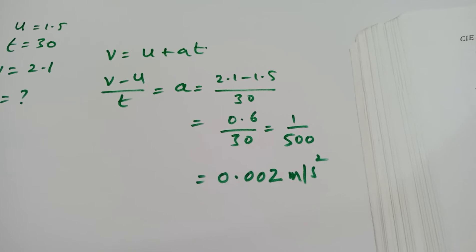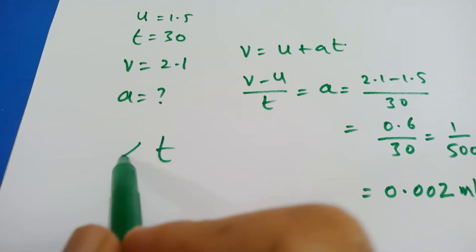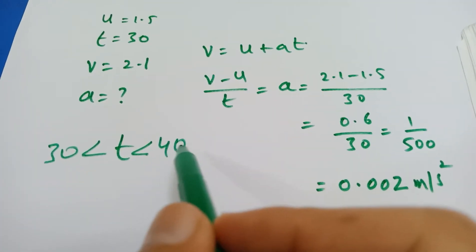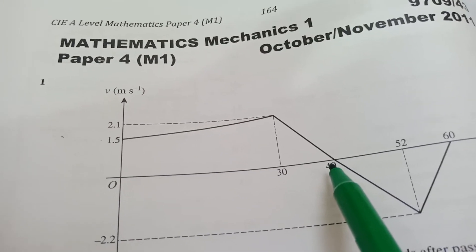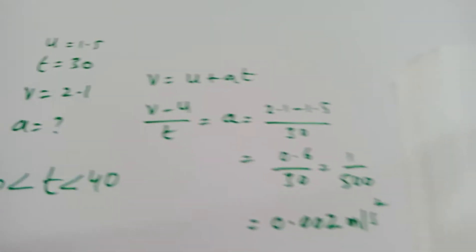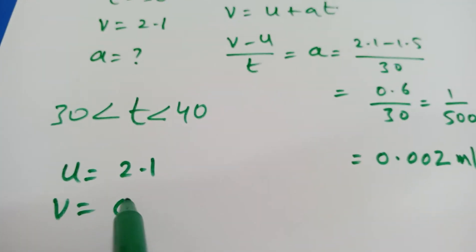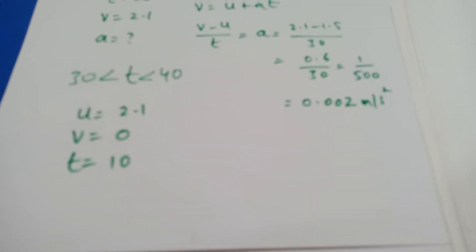For the interval from 30 to 40 seconds, you can see this is the segment from t = 30 to t = 40. The initial speed is 2.1 and the final speed is 0. The time taken is 10 seconds. Using the same approach you can find this acceleration.